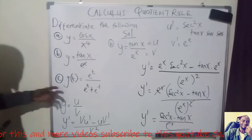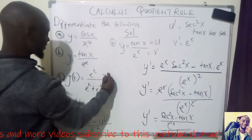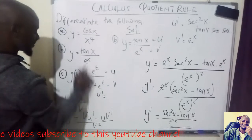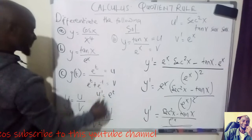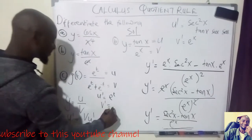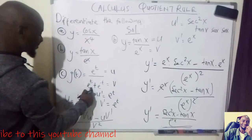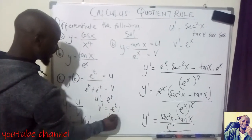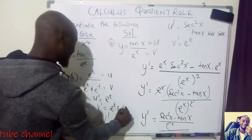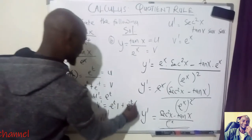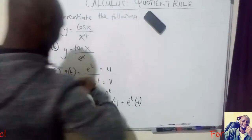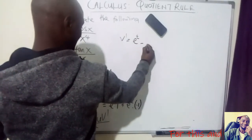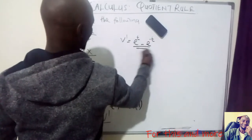For problem C, it will be the same thing. Name the numerator as U and the denominator as V. U prime will be the derivative of eᵗ, which is eᵗ. Then V prime: the derivative of the denominator. Using the product rule, you keep eᵗ and differentiate t to get 1, plus keep e^(−t) and differentiate −t to get −1. So V prime equals eᵗ minus e^(−t).